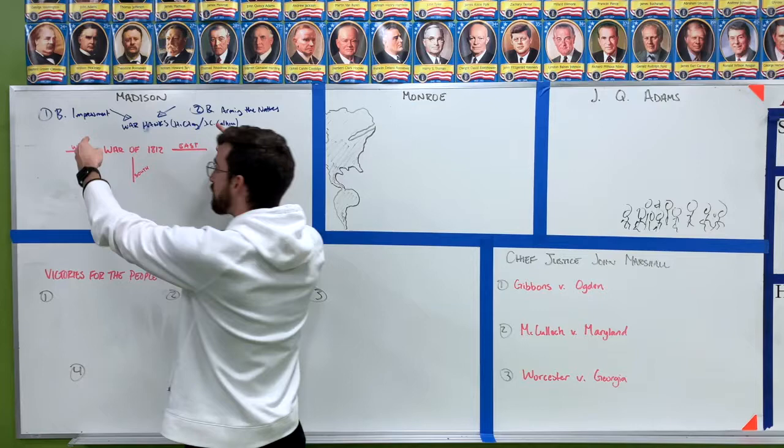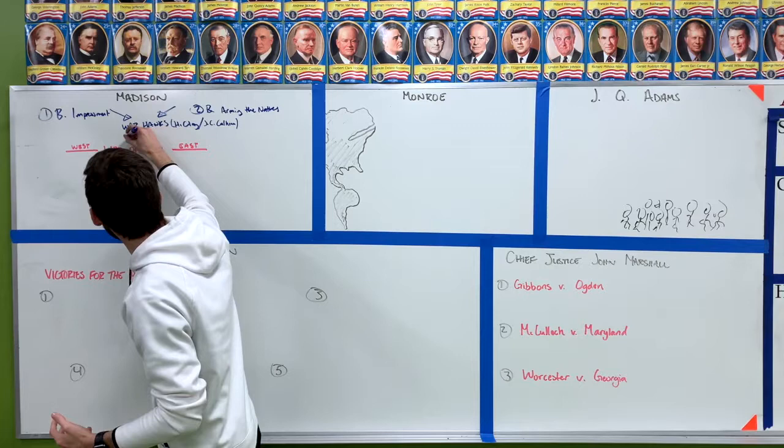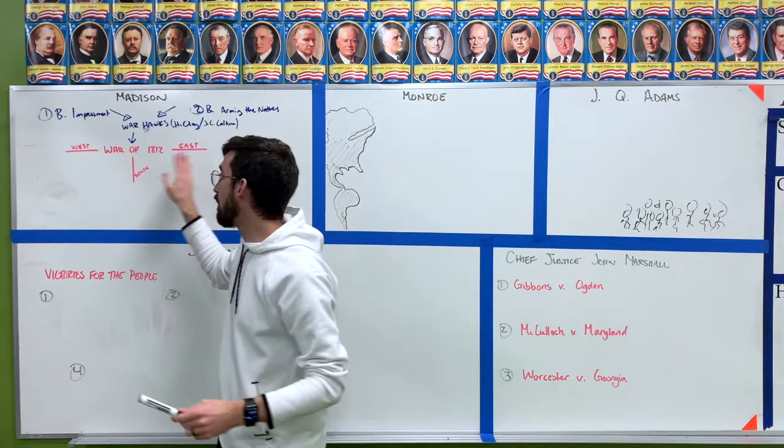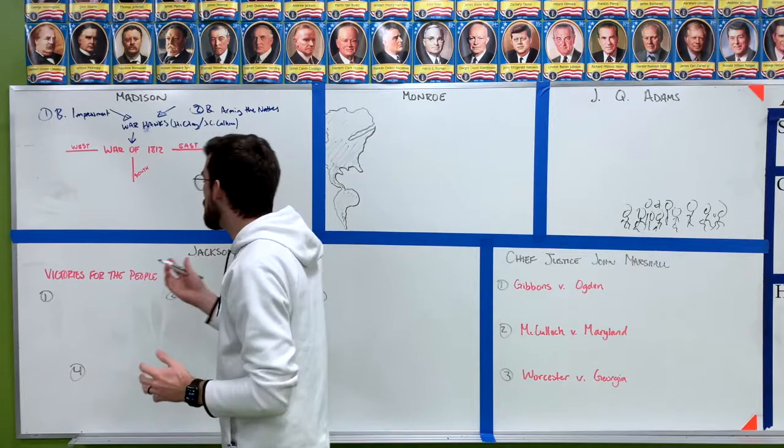Combining these two motivations — we're mad at Britain and these guys want us to go to war — leads us to the War of 1812. The War of 1812 is really fought in three different areas: it's fought in the east, it's fought in the west, and it's fought in the south. Let's start with the war in the west.